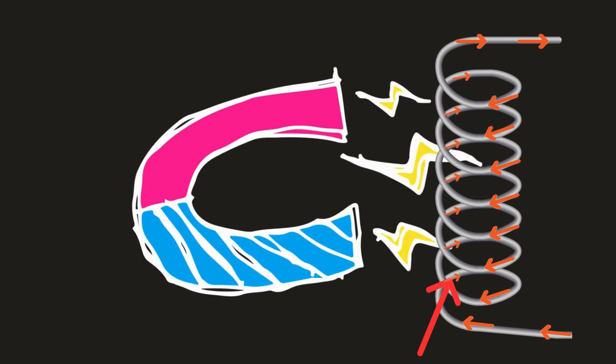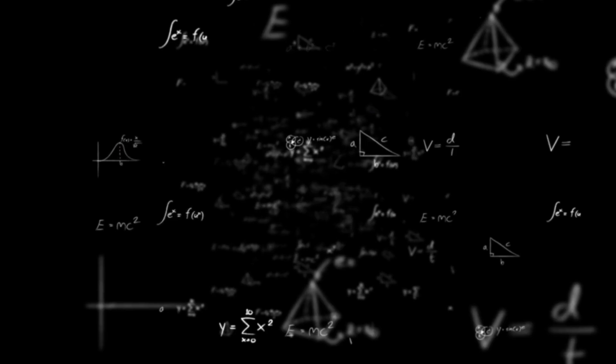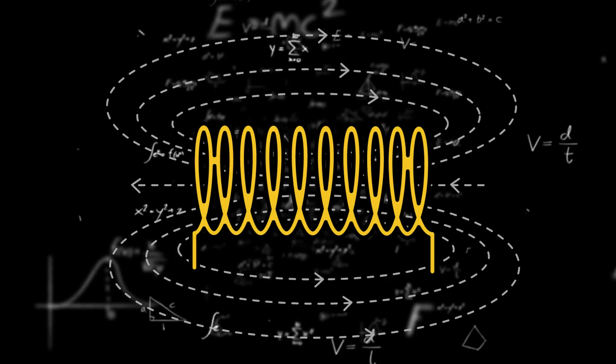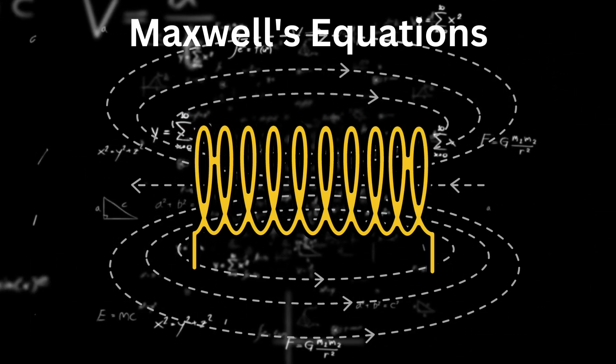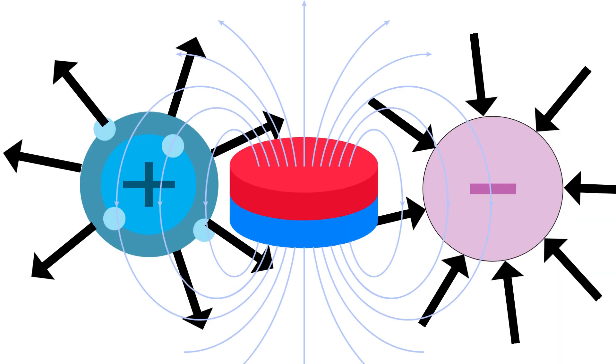The basic equations that govern electromagnetism, known as Maxwell's equations, define this relationship between electric charge and magnetism.